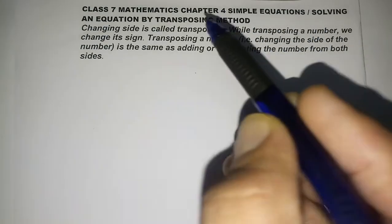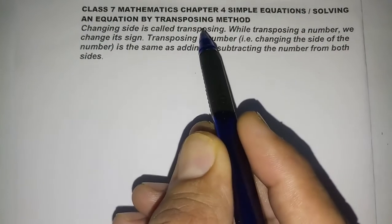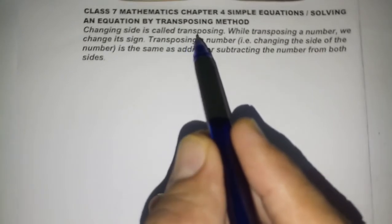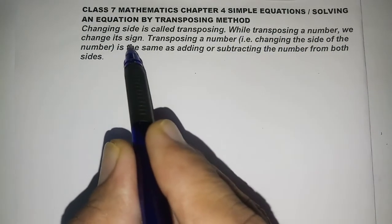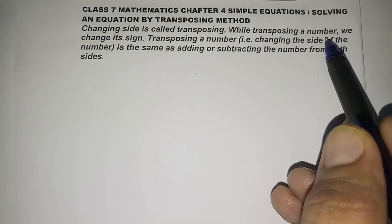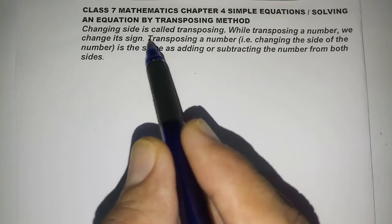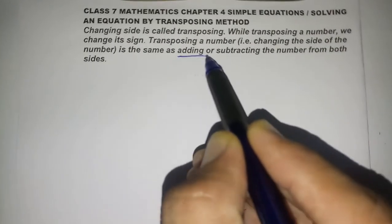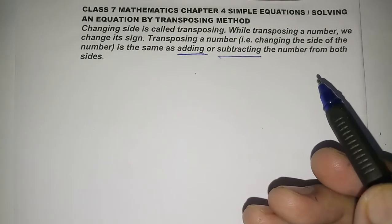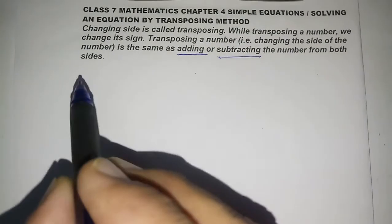But now we will turn towards another method called the transposing method. What is transposing? Changing side is called transposing — we change the side of numbers or variables. While transposing a number, we change its sign: plus becomes minus and minus becomes plus. Transposing is the same as adding or subtracting — this method applies for addition and subtraction operations.